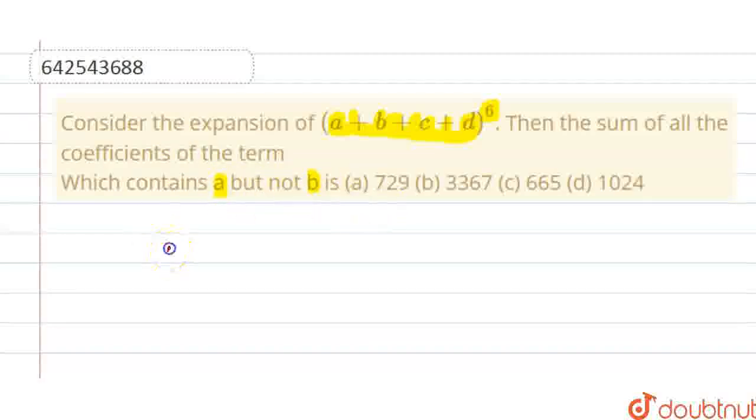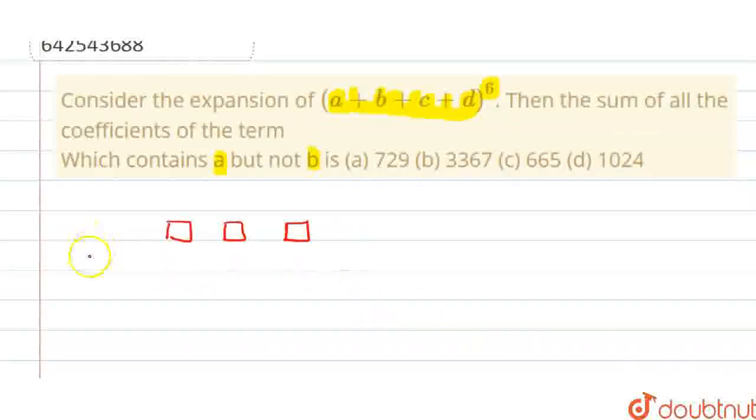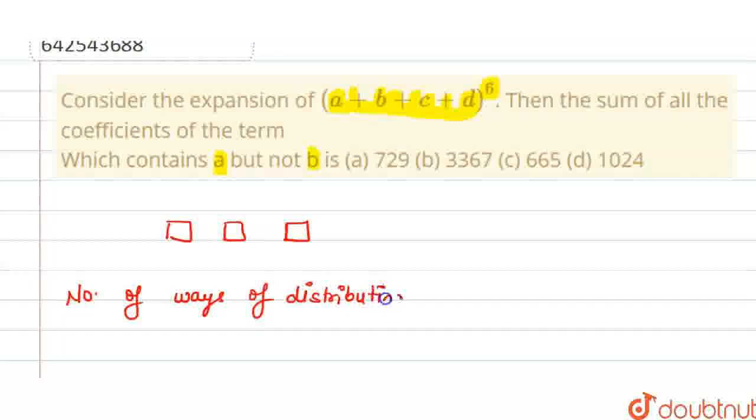That is we have three boxes and we have to fill six different objects in these three boxes. Then, the number of ways of distributing six different objects in three boxes will be these three boxes we can fill only A, C and D.